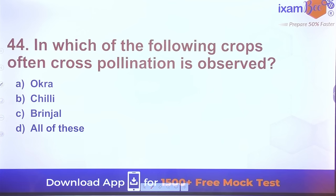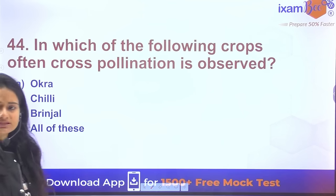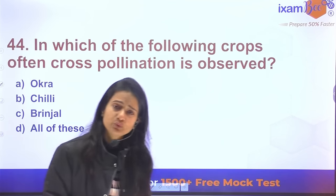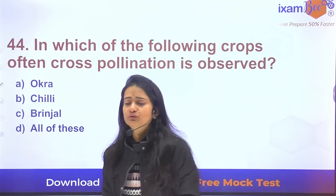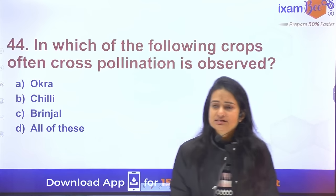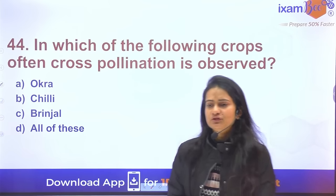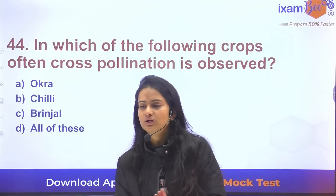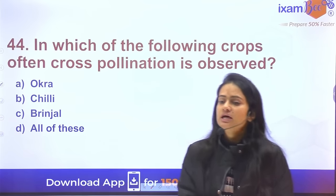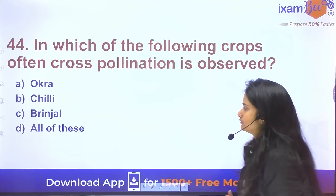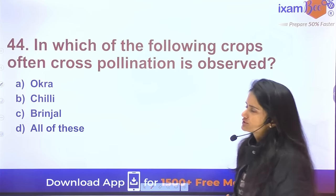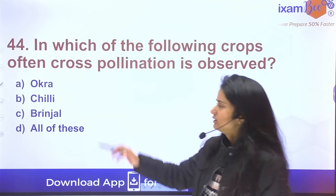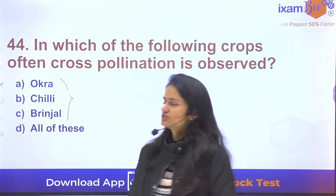Question 43: The seed rate of hybrid okra — in general, okra seed rate is around 8–10 kg per hectare, but for hybrid okra it is lower: 2.5 to 3 kg per hectare.